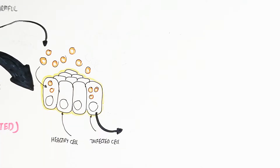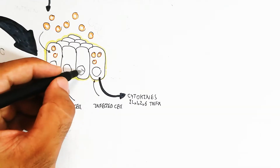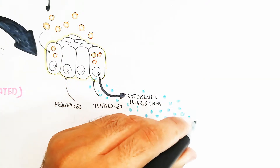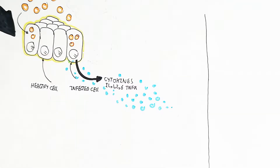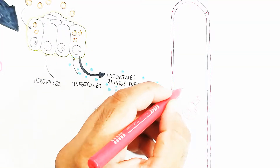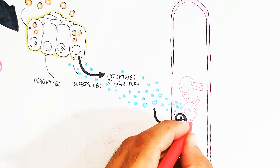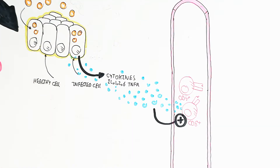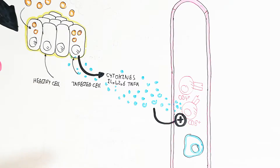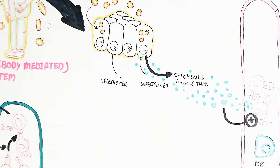Now we transition to cell-mediated immunity. When an antigen invades a healthy cell, creating an infected cell, this is the domain of cellular immunity. The damaged tissue produces cytokines including interleukin 1 to 6 and tumor necrosis factor alpha. This leads to activation of CD8 cytotoxic T cells, with CD4 T helper cells assisting in recruitment of more CD8 cells and macrophages.